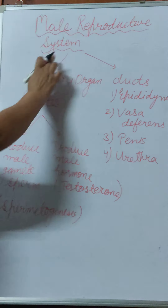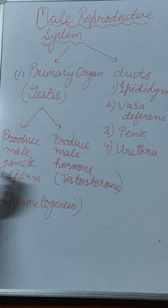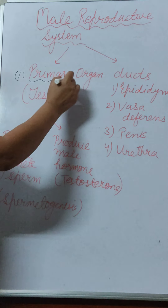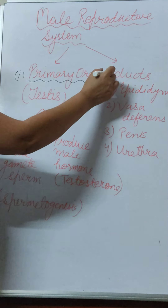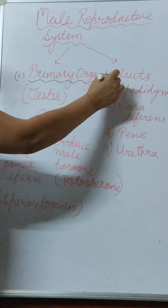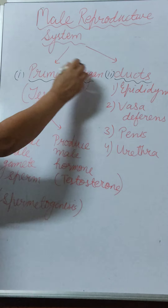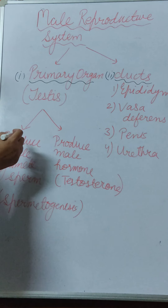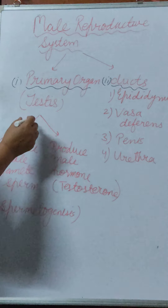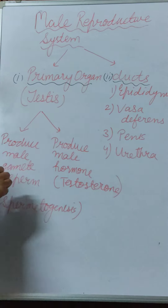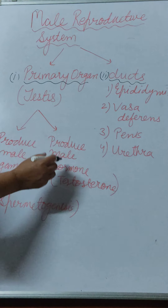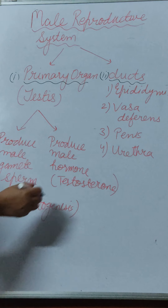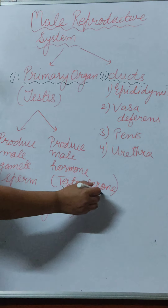The next topic for today's class is the male reproductive system. The reproductive system has two types of parts: the primary organ and the ducts or tubes. The primary organ is the pair of testes. This pair of testes is involved in the main functions: it produces the male gamete — sperm — and it also produces the male hormone, testosterone.